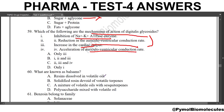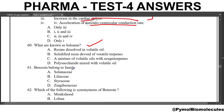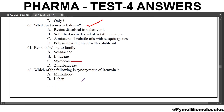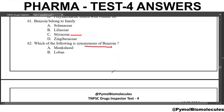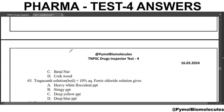What are balsams? Balsams are resins dissolved in a volatile oil. Benzoin belongs to the family Styracaceae. Next question: which of the following is the synonym for benzoin? The answer is Lubane. Lubane is the synonym for benzoin.